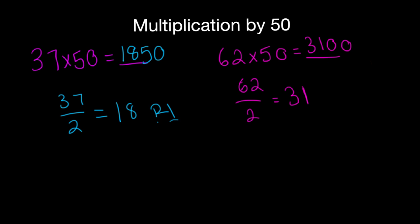Alright, so why exactly does this trick work? The reason lies in the fact that 50 is equal to 100 divided by 2. So that's really what you're multiplying the numbers by.